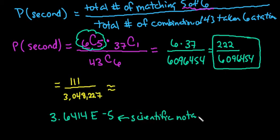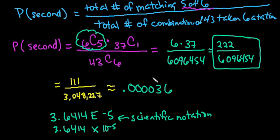So your calculator may give it to you like that, or it may give it to you as 3.6414 times 10 to the negative 5th. Or I have seen some calculators that actually give it to you as 0.00036, which is what this means, the scientific notation means. So if you wanted to express it as a decimal, you could do that as well.